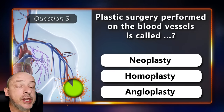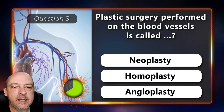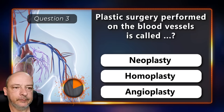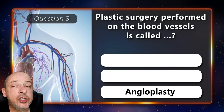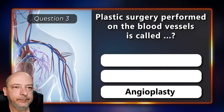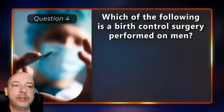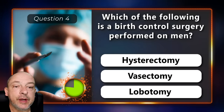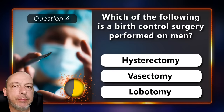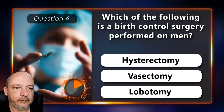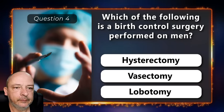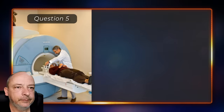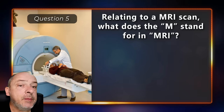Plastic surgery performed on the blood vessels is called neuplasty, homoplasty, or angioplasty? It is angioplasty. Which of the following is a birth control surgery performed on men — hysterectomy, vasectomy, or a lobotomy? The right answer is vasectomy.